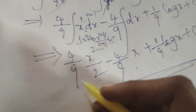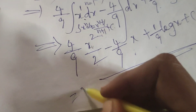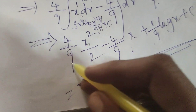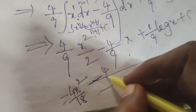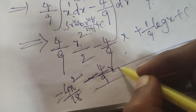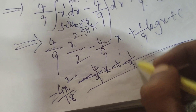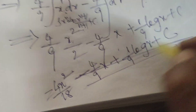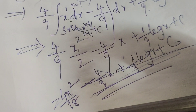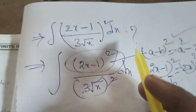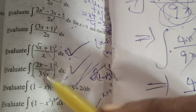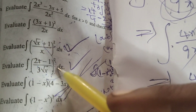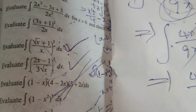The final answer is 4x squared by 18 minus 4 by 9 times x plus 1 by 9 times log x plus C. This is the solution to the evaluated integral of (2x minus 1) by (3 root x) whole square dx. Thank you.